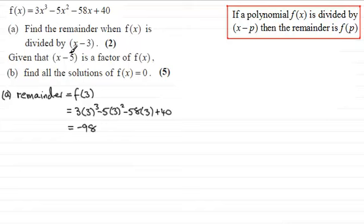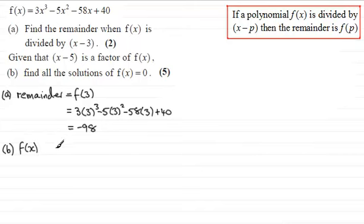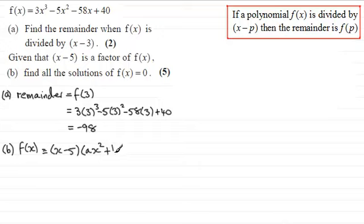For part (b) we're given that x minus 5 is a factor of f of x, and we're asked to find all the solutions of f of x equals 0, for 5 marks. Welcome back. Since x minus 5 is a factor of f of x, then f of x must be identical to x minus 5 multiplied by a quadratic factor of the form ax squared plus bx plus c.